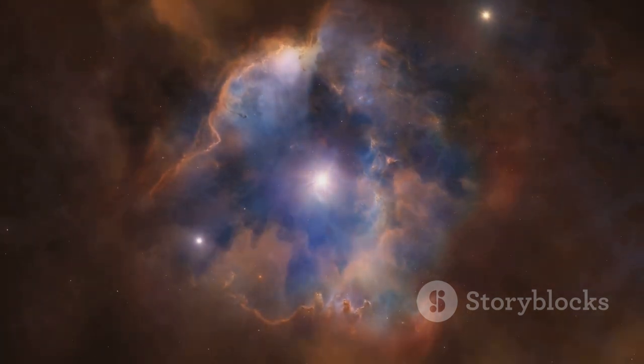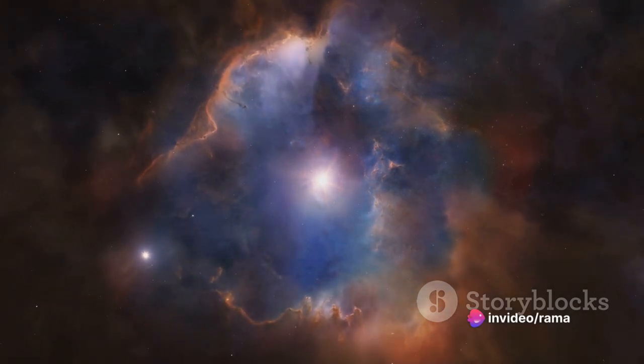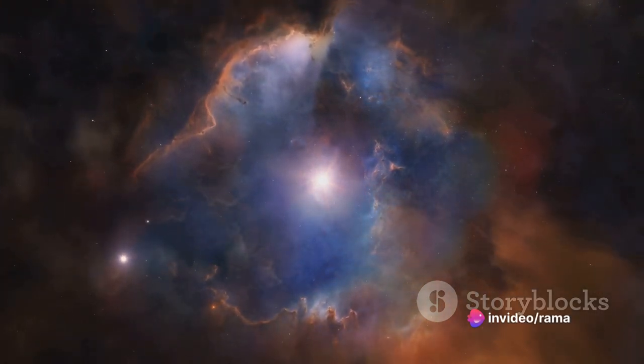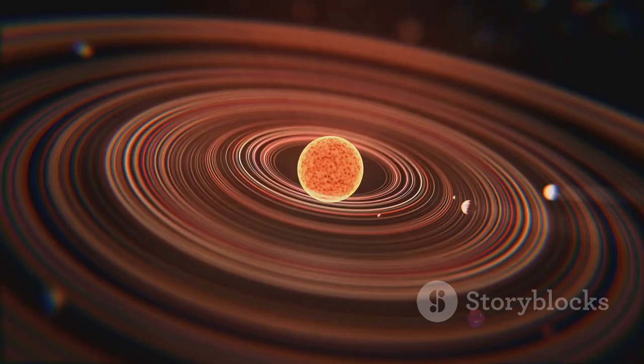But within this spinning vortex, smaller pockets of gas and dust began to collapse as well, giving birth to stars. These pockets, known as nebulae, house the nurseries of star formation. The intense pressure and heat within these nebulae ignite nuclear fusion, transforming hydrogen into helium and voila, a star is born.